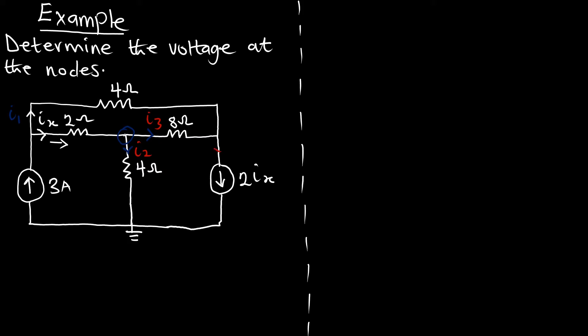At this point, we only have a current 2 times Ix, and we already have current Ix, so we can do the analysis. Now for the voltages we are going to assign to the nodes: at node 1, I'll call the voltage V1; at the second node, V2; and at the third node, V3. My voltages and currents are now assigned in the circuit.